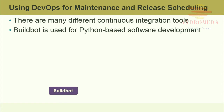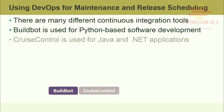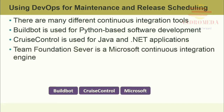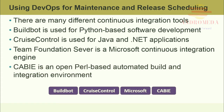BuildBot is used for Python-based software development. It started as a lightweight alternative to Tinderbox, and Mozilla is a flagship user of BuildBot. CruiseControl is used for Java and .NET applications and includes many plugins to support a variety of source and build options. TeamFoundationServer is a Microsoft continuous integration engine and is at the core of Microsoft's Application Lifecycle Management Solution, ALM. KABI is an open-source, Perl-based automated build and integration environment that builds jobs based on build info stored in a MySQL database and supports just about any command line build.